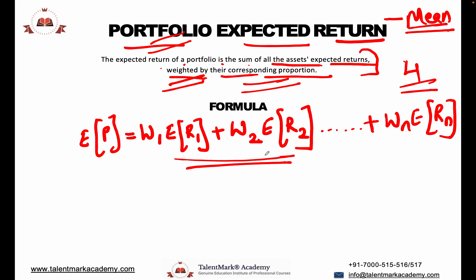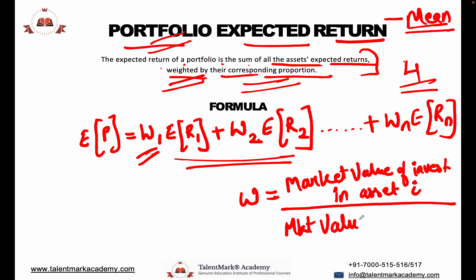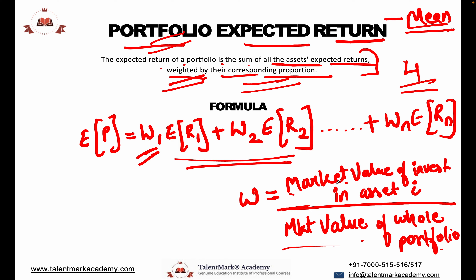How do we find the weight of a particular asset? Weight equals the market value of investment in asset i divided by the market value of the whole portfolio. The numerator is the market value of investment in that particular asset.